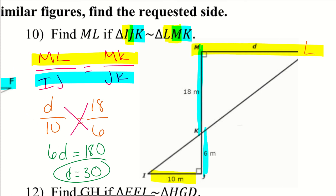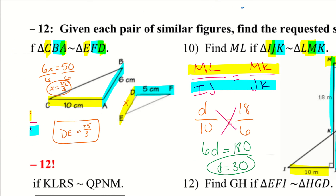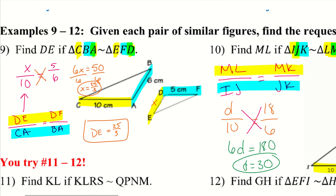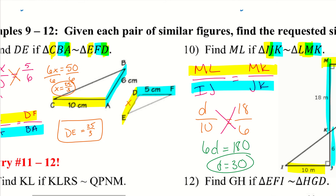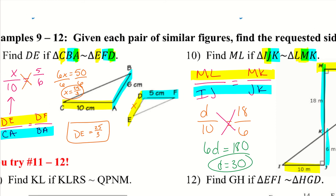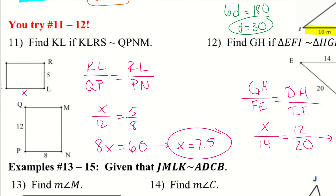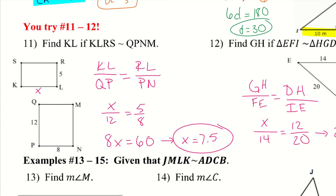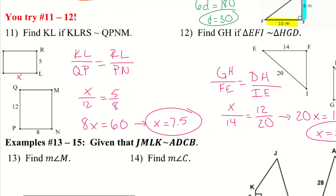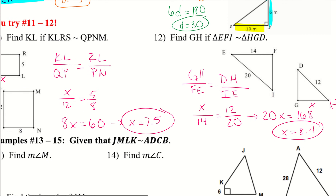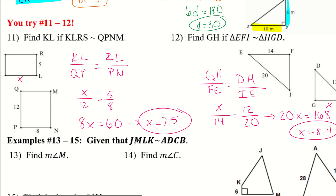I want you to go ahead and try numbers 11 and 12. Make sure you are creating these proportions so that you can compare them. Use your highlighters, circle, underline as much as needed so you can compare all the sides. I made the proportions, plugged in the numbers, and was able to solve for the missing side by using X for the missing side.